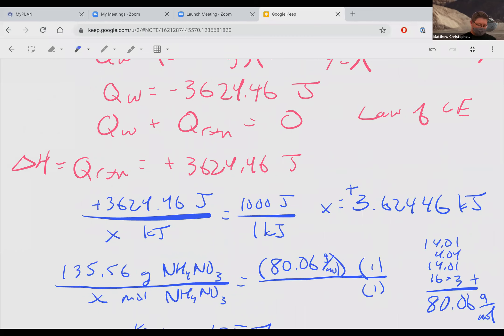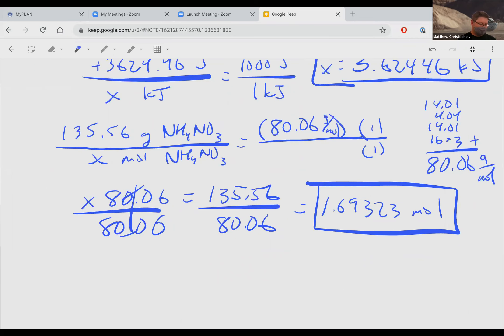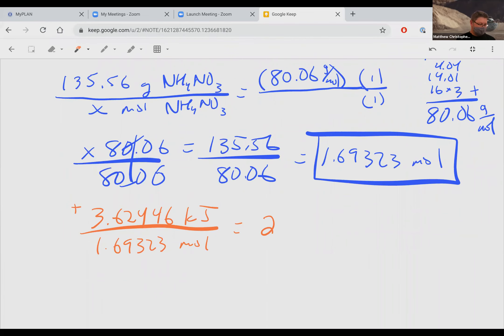And we have the energy here. And we have the moles here. So the last thing is to divide those two numbers. That's positive 3.62446 kilojoules and 1.69323 moles, which obviously is positive as well. And now I believe I can divide those two numbers if I did my math right. 3.62446 divided by this whole thing.